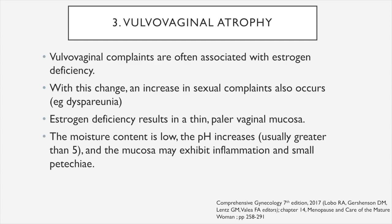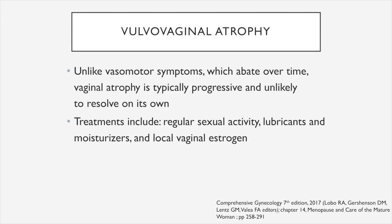The third organ system affected by menopause is the vulvovaginal skin, which manifests mainly as vulvovaginal atrophy. Vulvovaginal complaints are often associated with estrogen deficiency, and with this change, an increase in sexual complaints also occurs, especially dyspareunia. Estrogen deficiency results in thin, pale vaginal mucosa with low moisture content. pH increases, usually greater than 5, and the mucosa may exhibit inflammation and small petechiae. Unlike vasomotor symptoms, vaginal atrophy is typically progressive and unlikely to resolve on its own. Treatments include regular sexual activity, lubricants and moisturizers, and local vaginal estrogen.